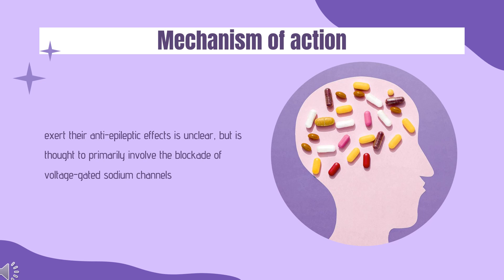Mechanism of Action: The exact mechanism through which oxcarbazepine and its active metabolite MHD exert their anti-epileptic effects is unclear, but is thought to primarily involve the blockade of voltage-gated sodium channels. The opening and closing of sodium channels allows for the propagation of action potentials along neurons. In epilepsy, these action potentials can occur in excess of that required for normal function, and the repetitive and pathological firing of these action potentials leads to seizure activity. Both oxcarbazepine and MHD are thought to inhibit seizure activity by binding to the inactive state of voltage-gated sodium channels, thus prolonging the period in which the receptor is unavailable for action potential propagation. This helps to stabilize hyper-excited neuronal membranes, inhibit repetitive neuron firing, and prevent the spread of seizure activity within the CNS without affecting normal neuronal transmission.